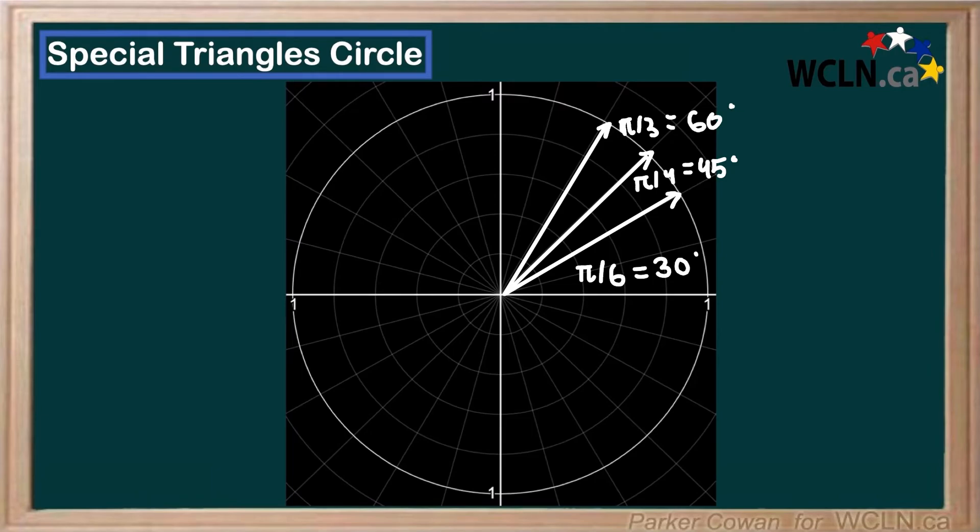I also could just think pi over 3 is greater than pi over 6, so it must be 60. All right, so once you have these three memorized, it's pretty easy to build from there because this whole circle can be divided up into bits of pi over 6, pi over 3, pi over 4.